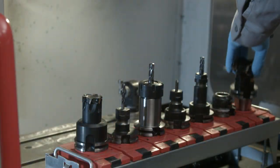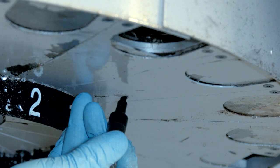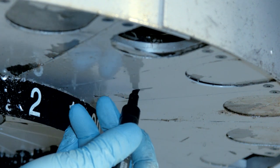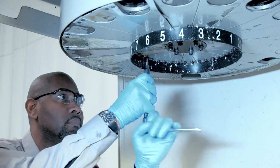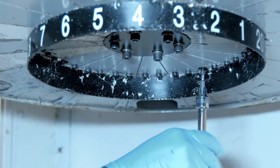Remove all the tools from the carousel and note their location. Mark the carousel plate at pocket 1 to line up with the number ring during reinstall. With an allen key or a ratchet set, remove the four fasteners from the number ring and remove the number ring.